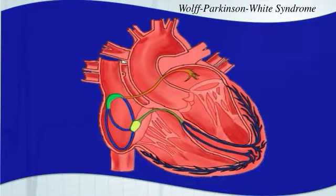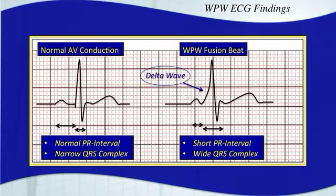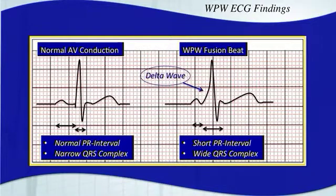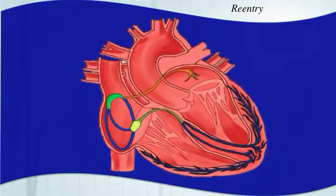Here are the classic findings when you have WPW: a shortened PR interval, a widened QRS complex, and a delta wave. You don't always see it because they have different types of conduction. This WPW image is literally what you get if you take normal conduction and just add a delta wave — it's a fusion beat of the normal conduction and the antegrade conduction as well. That's important to remember as you look for those findings.